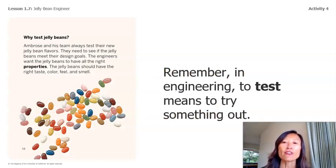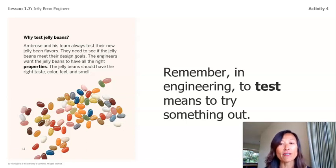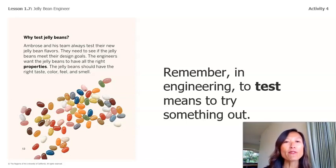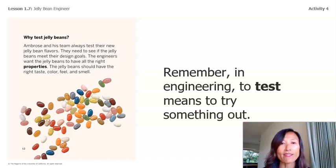In engineering, to test means to try something out. When engineers test something, they want to see how its properties compare to the properties they are looking for. Why test jelly beans? Ambrose and his team always test their new jelly bean flavors. They need to see if the jelly beans meet their design goals. The engineers want the jelly beans to have all the right properties — the right taste, color, feel, and smell.